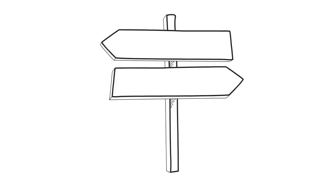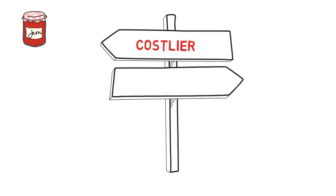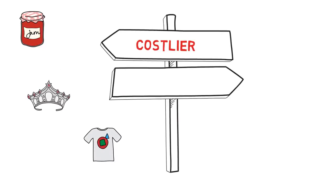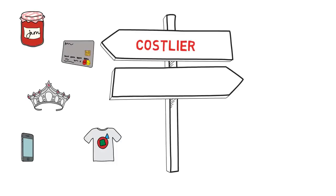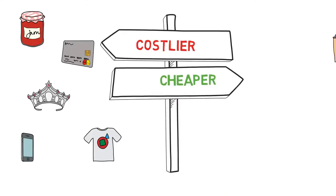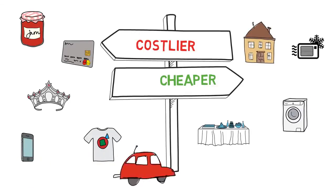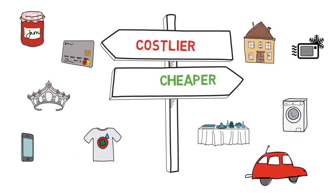After applying GST, the cost of some items will increase, while others will decrease. Items whose cost will increase include packaged food, jewelry, ready-made garments, mobile services, credit card services, etc. Items whose cost will decrease include home restaurant bills, AC, washing machine, microwave oven, small cars, and there will be less taxes on industries.